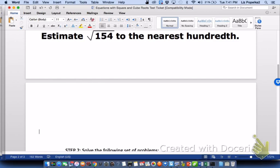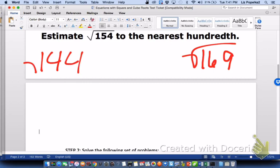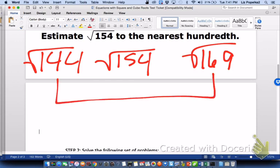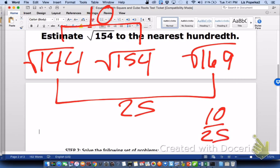Here we go. First of all, I know that the perfect square that is bigger than 154 is 169, and the perfect square that is smaller than 154 is 144. So 154 is right here in between them. The total distance from 144 to 169 is 25, and the distance from 144 to 154 is 10. So the fraction is 10 out of 25.